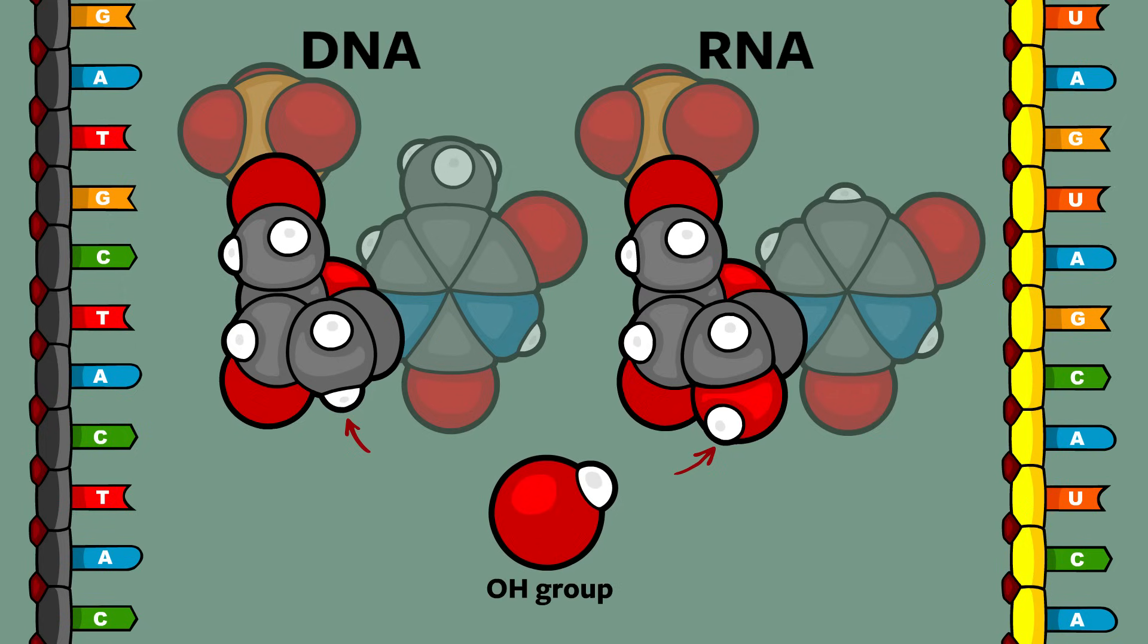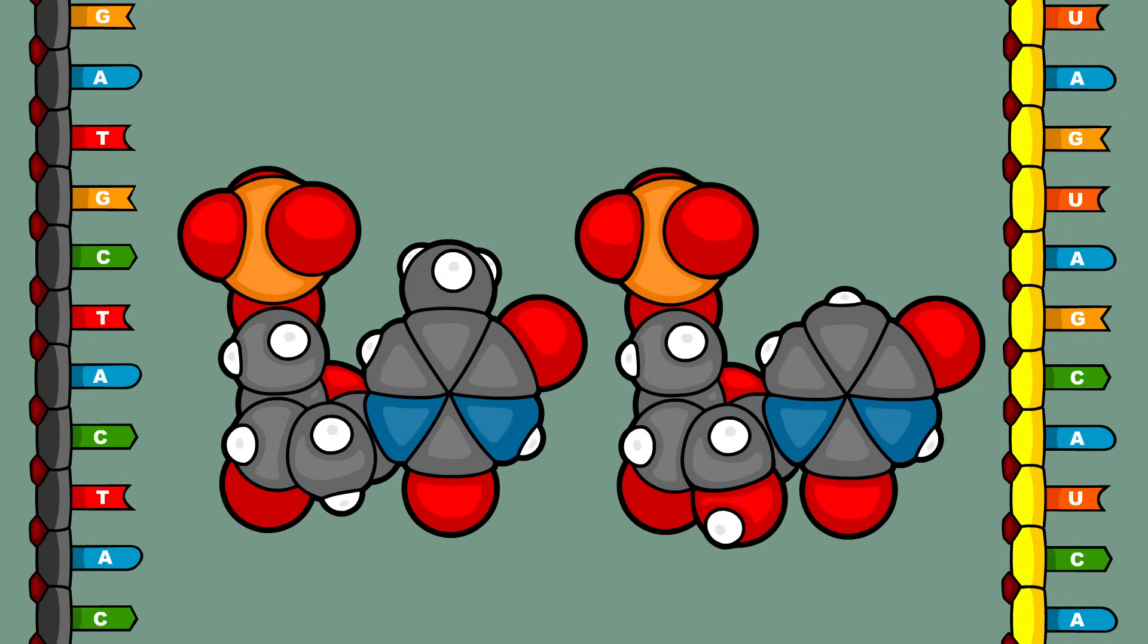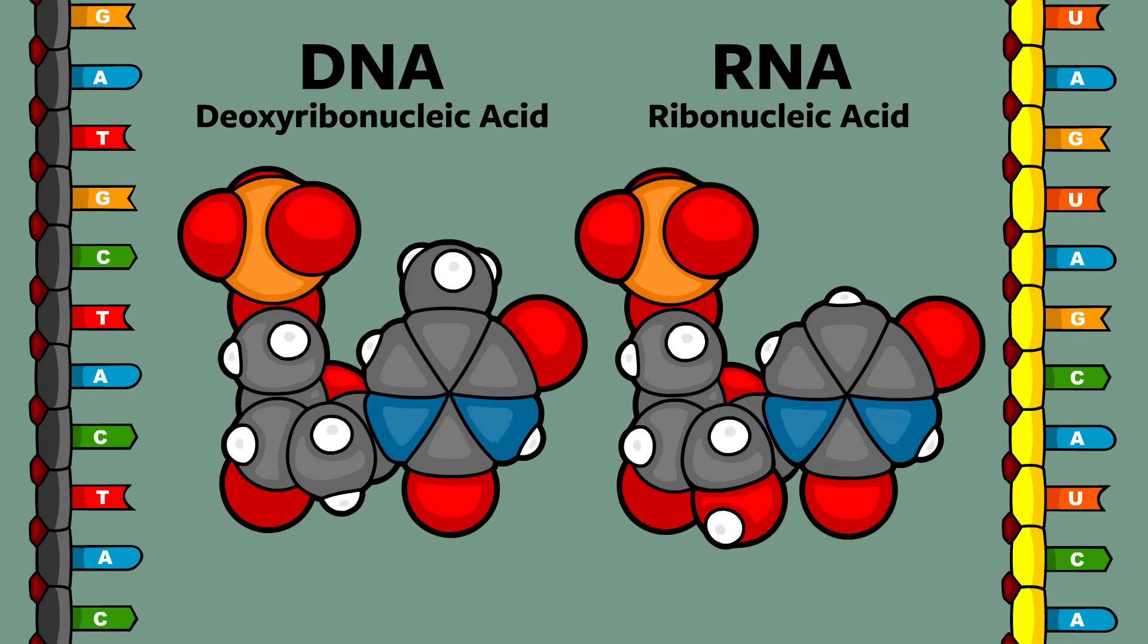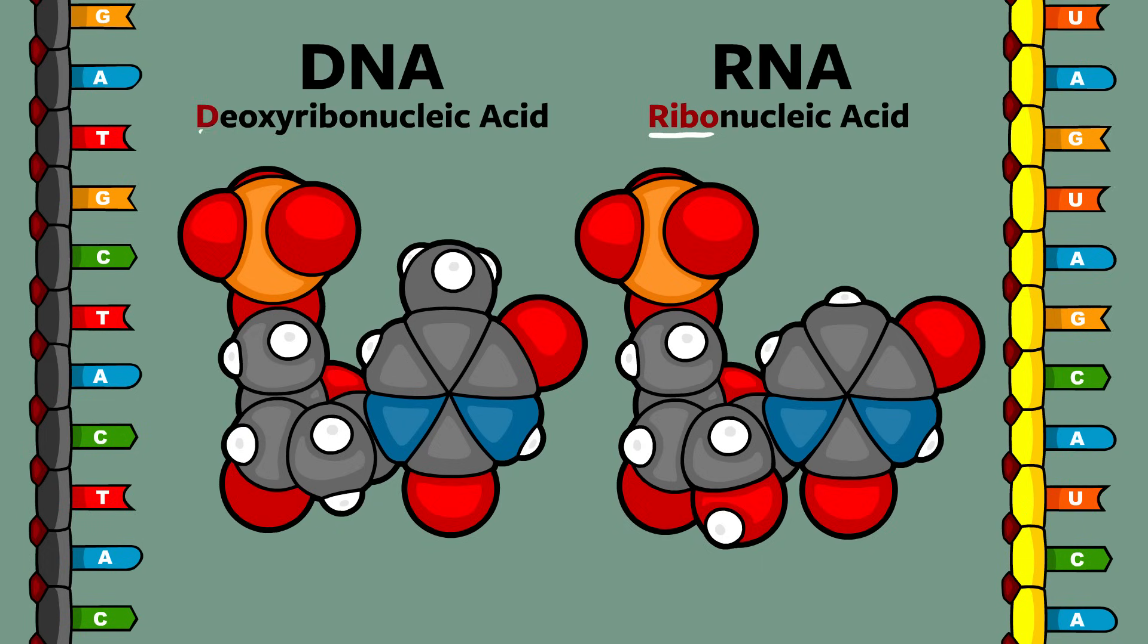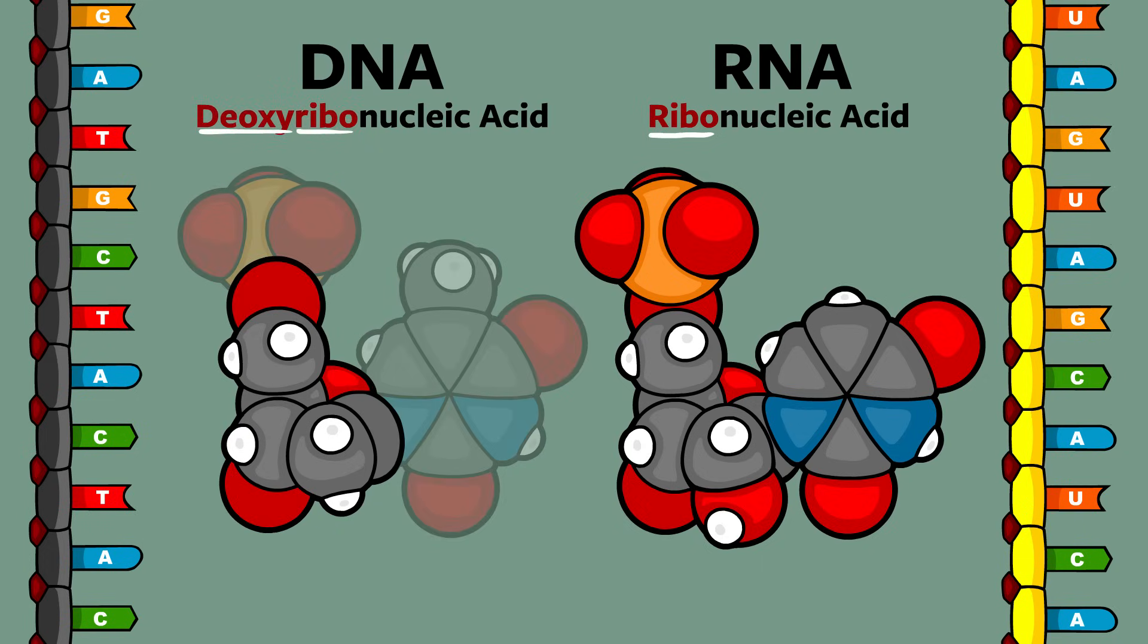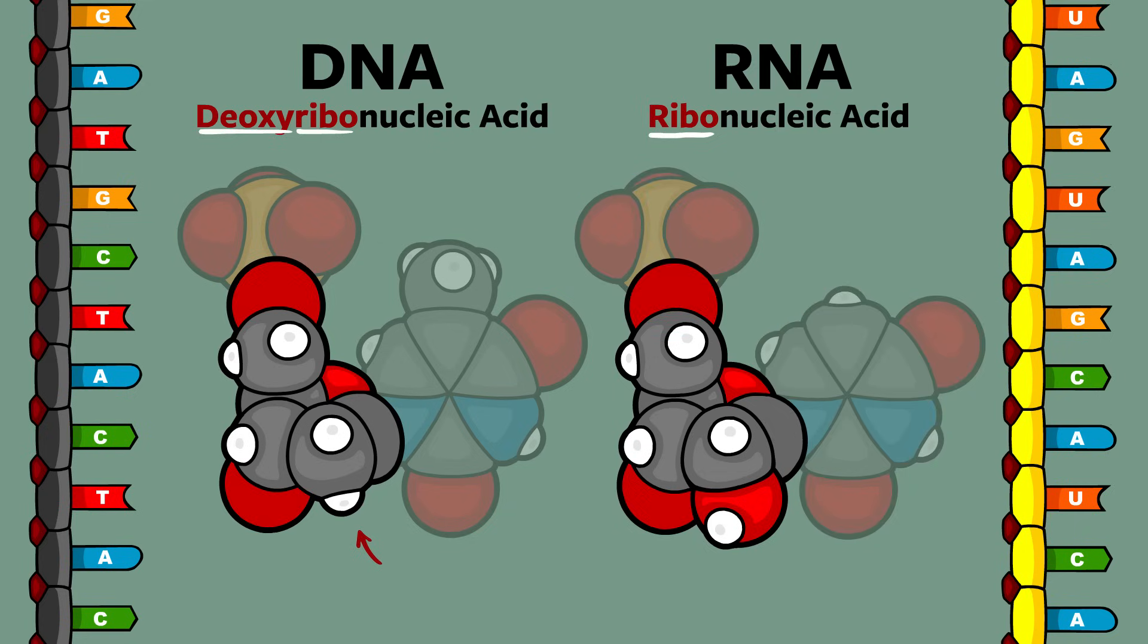This seemingly tiny difference has huge consequences. It's so important, in fact, that this difference is reflected in the names of these molecules. RNA stands for ribonucleic acid. Ribo, because the backbone is a normal ribose sugar. DNA stands for deoxyribonucleic acid. Deoxy, because its ribose sugar has been deoxygenated. One of its oxygen-hydrogen groups has been ripped away and replaced with a single stable hydrogen atom.